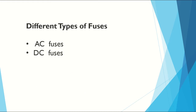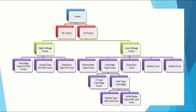Different types of fuses. Fuses are of two types: DC fuses and AC fuses. There is no subdivision under DC fuses. The AC fuses are again divided into two types: high voltage fuses and low voltage fuses.